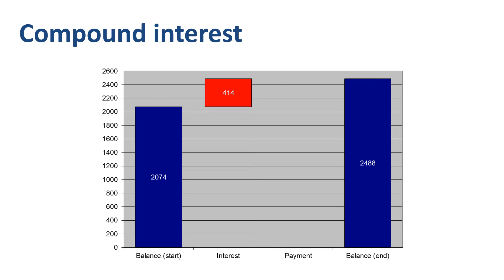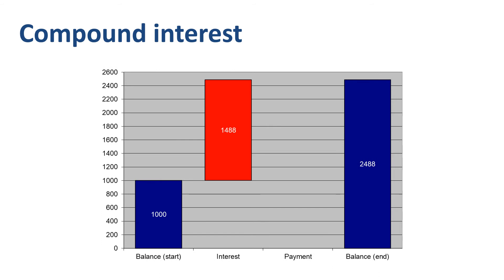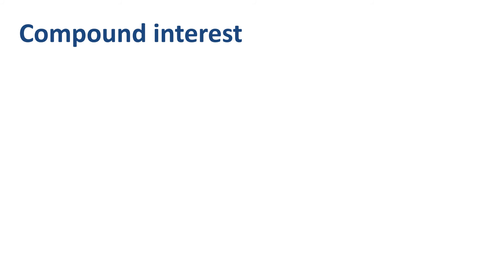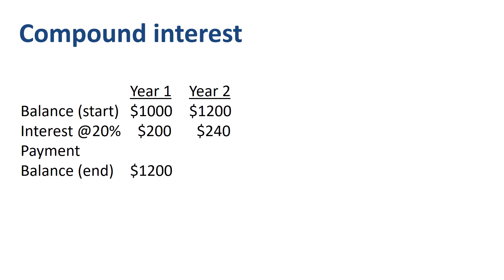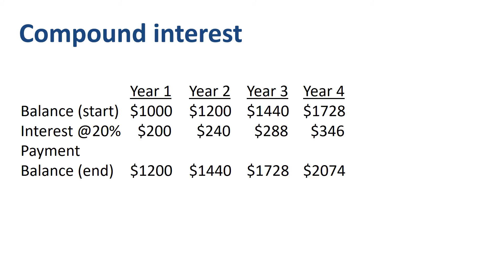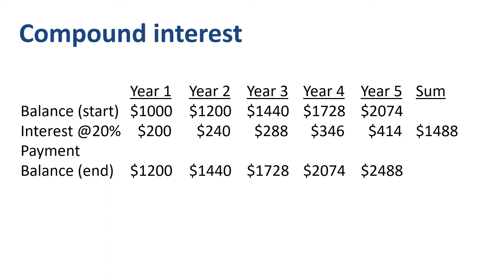In short, you have accumulated $1488 of interest on top of a debt that originally was just $1000. Here's the same data summarized in a table. Through the power of compound interest, a $1000 problem has turned into a problem of $2488.